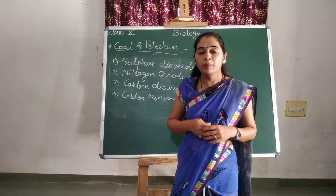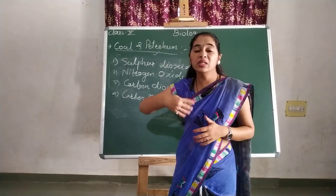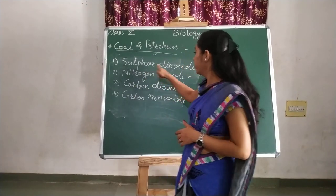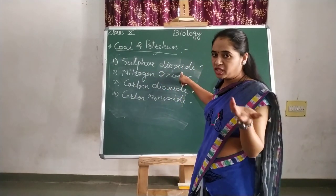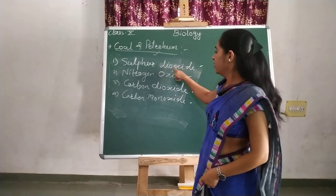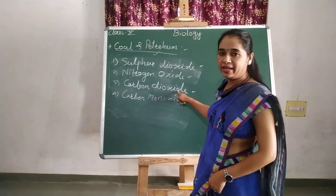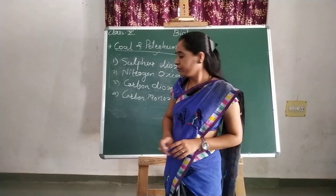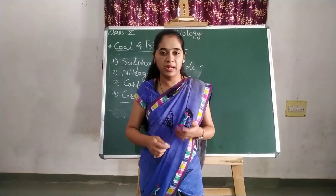When we burn coal and petroleum, it releases some gases: sulphur dioxide, nitrogen oxide, carbon dioxide, and carbon monoxide. Carbon monoxide is a little bit different — I will tell you about it later.